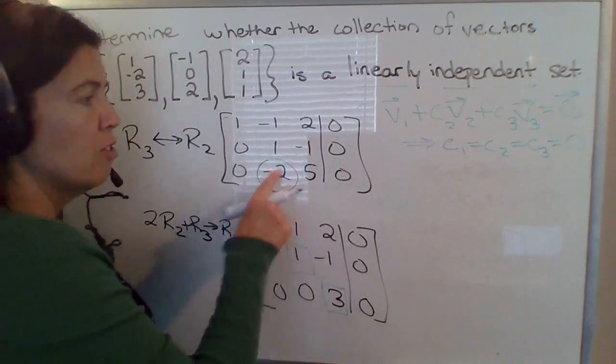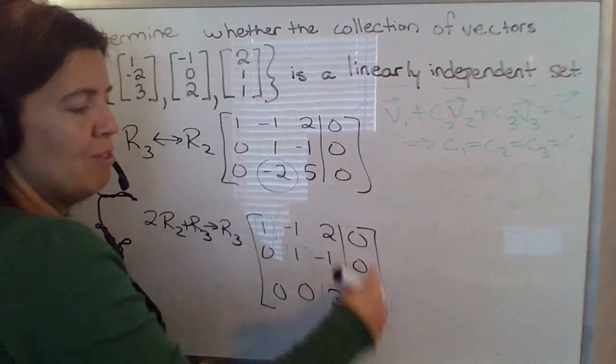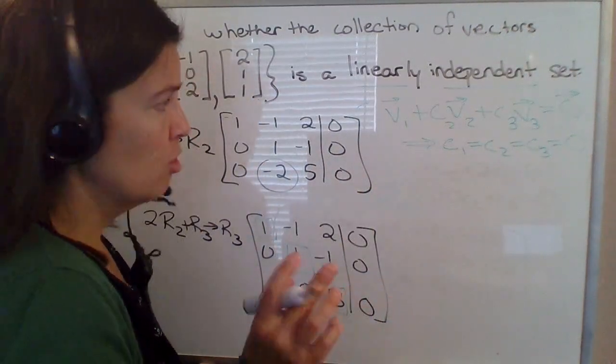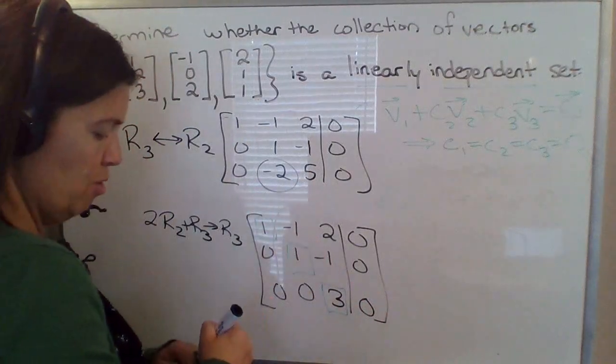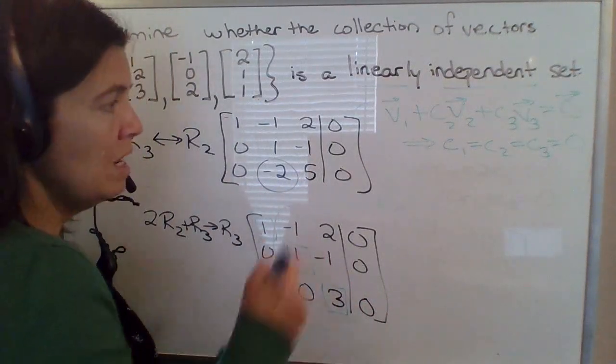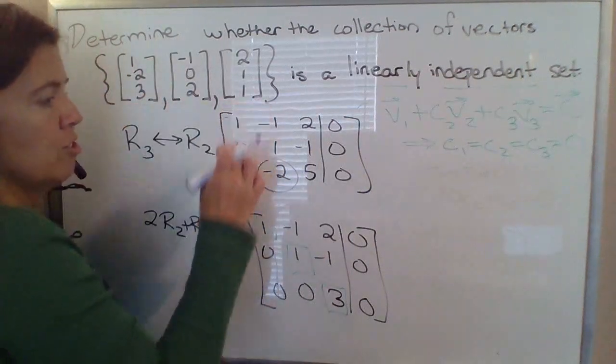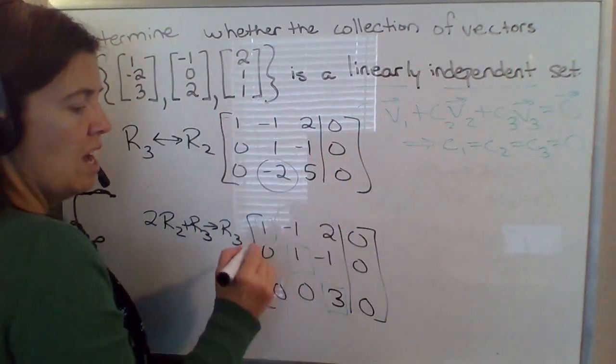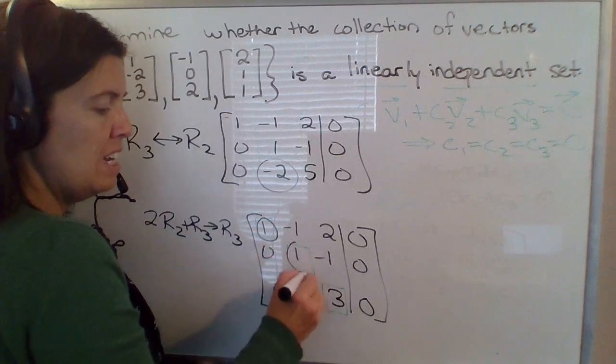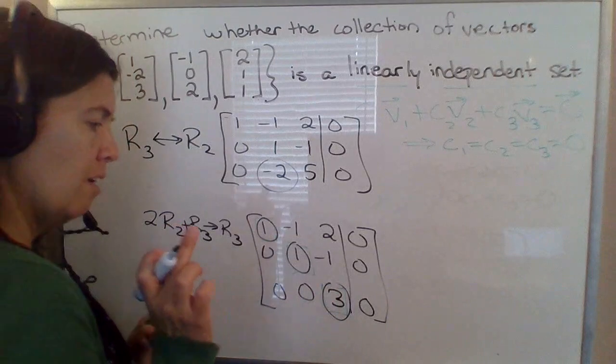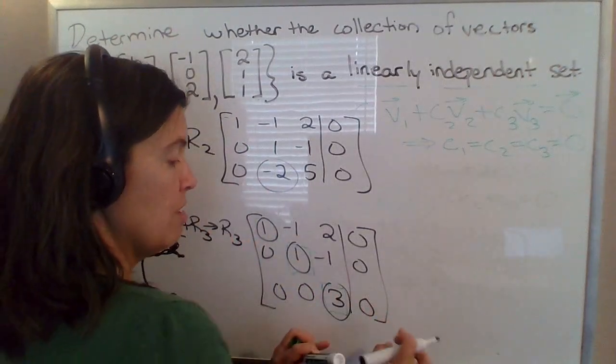One other thing I want to point out. So notice in all the row reduction, the column of zeros and the constant column stayed a column of zeros. So when we set these up in the future, a couple of shortcuts. You don't need to write this zero column. You just set up your vectors as the columns of a matrix. And if you get a pivot in each column, then the vectors are linearly independent. Okay. And that's mainly what I want to show you with this example.